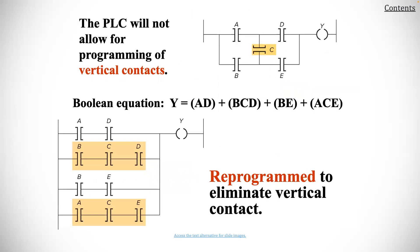The PLC will not allow for programming of vertical context. Boolean equations, as were shown here, can be reprogrammed to eliminate the vertical content.